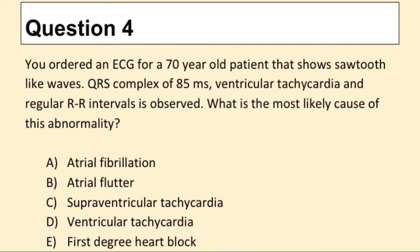Question 4. You ordered an ECG for a 70-year-old patient that shows sawtooth-like waves, a QRS complex of 85 ms, ventricular tachycardia, and regular RR intervals. What is the most likely cause of this abnormality?